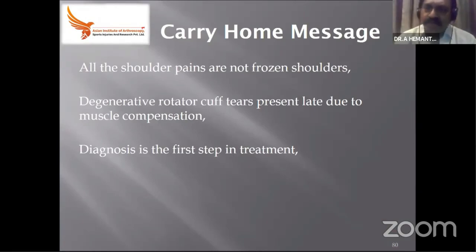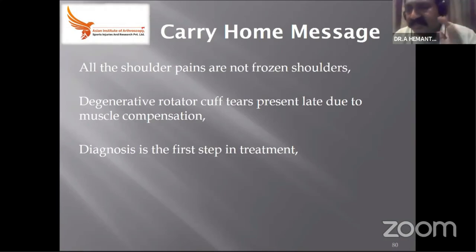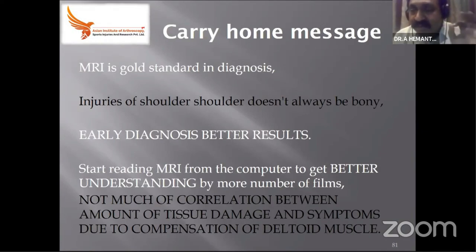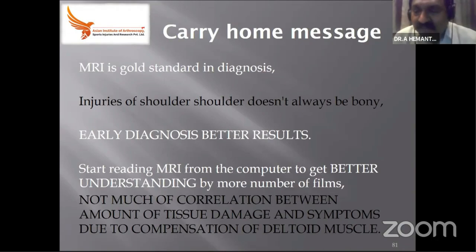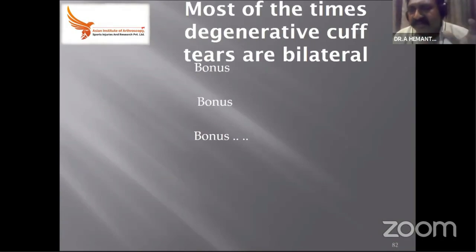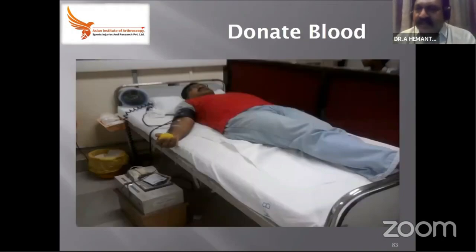Carry-home messages: all shoulder pains are not frozen shoulders. When you can't examine a shoulder, it becomes more important to identify the pathology by MRI — when the patient is painful and not cooperating for examination, MRI gives a lot of information. Diagnosis is the first step in treatment. MRI is the gold standard for most soft tissue injuries. Injuries around the shoulder need not always be bony. Early diagnosis gives better results because the cuff tear progresses. There is not much correlation between symptoms and amount of damage — a massive tear may exist while the patient is still functionally doing well, due to the deceptive nature of the shoulder girdle muscles, mostly deltoid. Thank you.